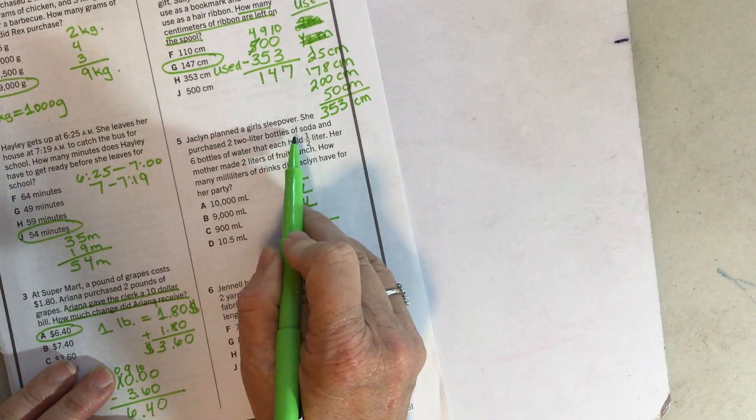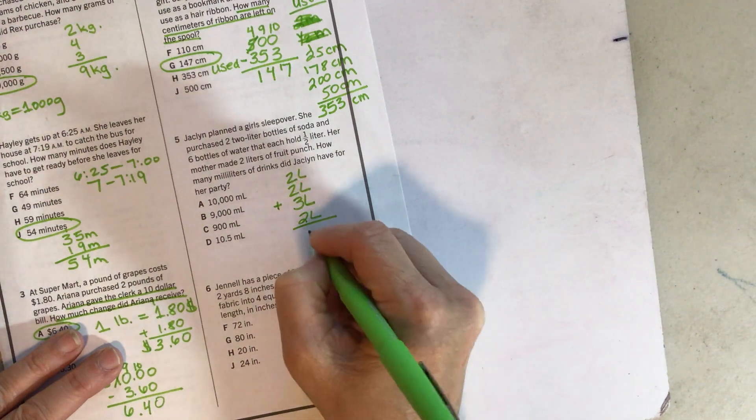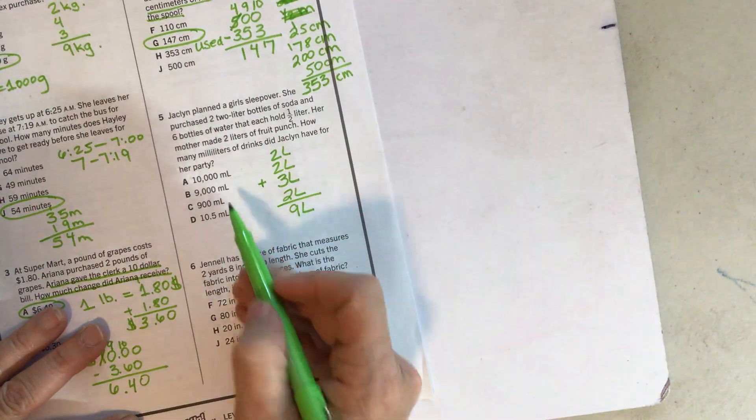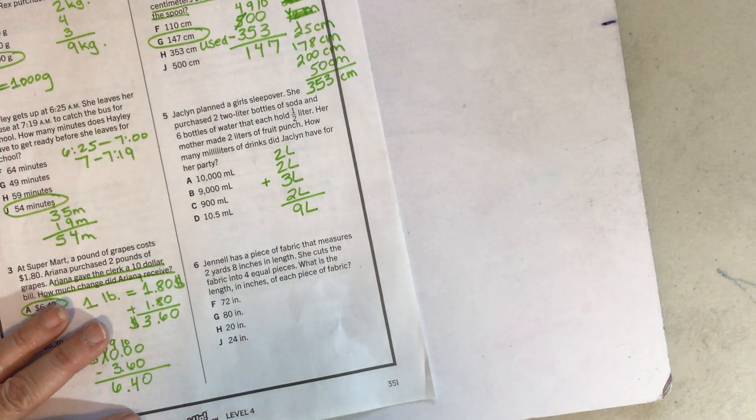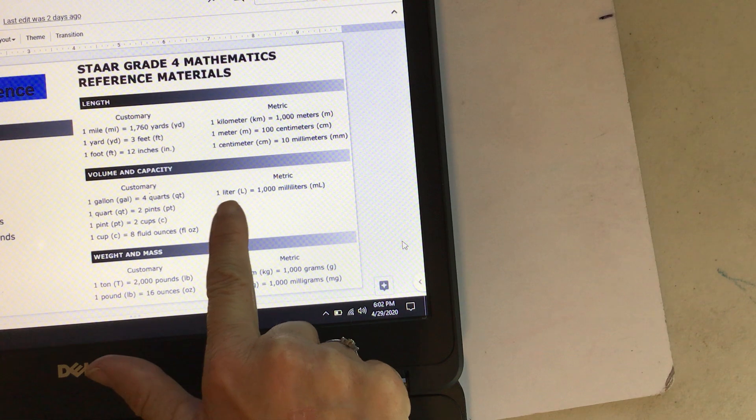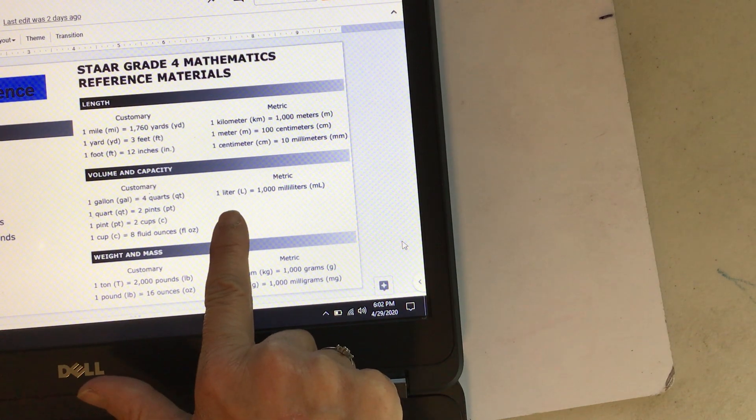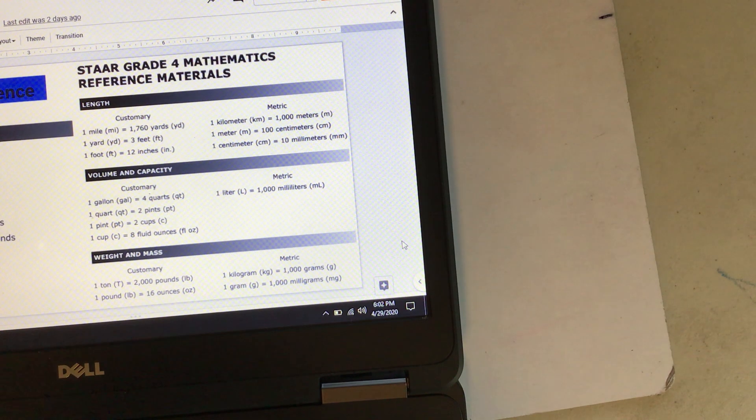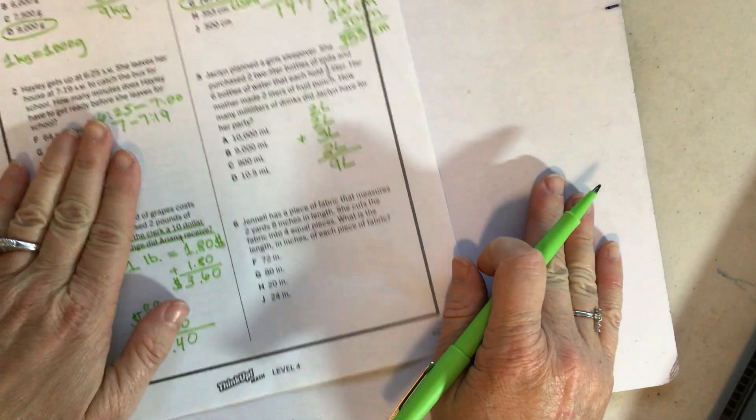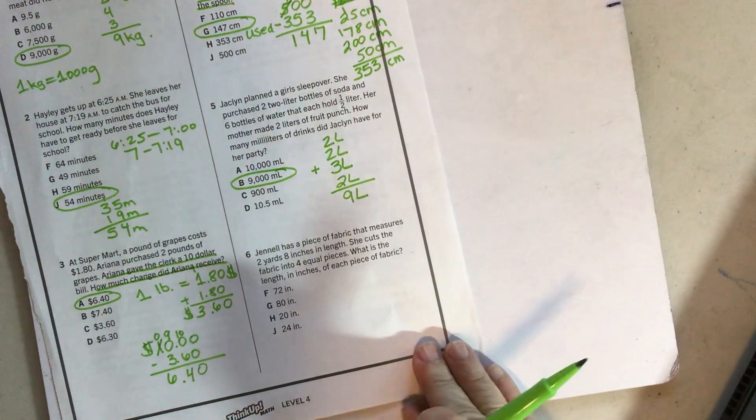So if I add that together, one, two, three, four, five, six, seven, eight, nine liters. That is how many liters that I have, but it's not asking me about liters. It's asking me about milliliters. So if I look on my conversion, I can see that one liter is a thousand milliliters. So if one is a thousand and two is 2,000 and three is 3,000 and so on and so forth, then you would have 9,000 milliliters.